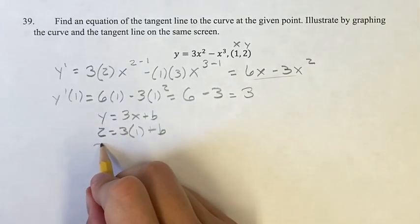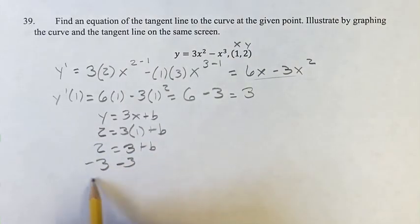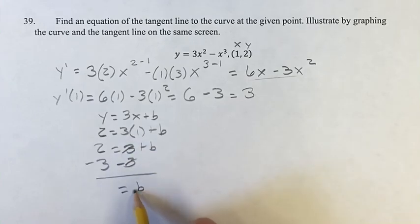Now we can just solve for b. 2 is equal to 3 times 1 is 3 plus b, subtracting 3 from both sides, and b is equal to negative 1.